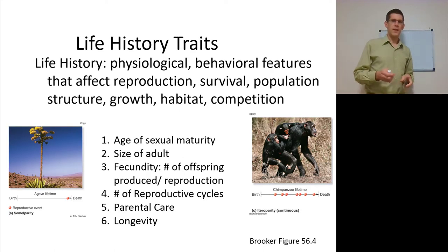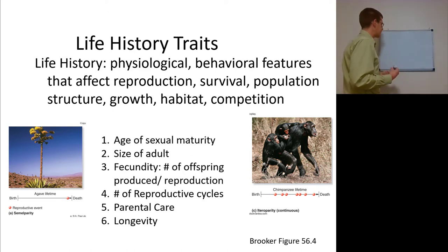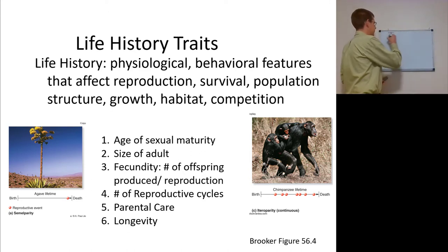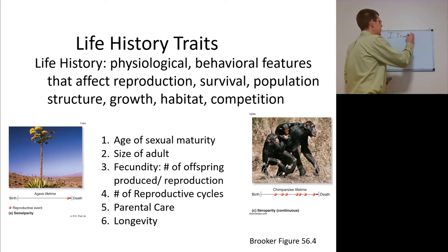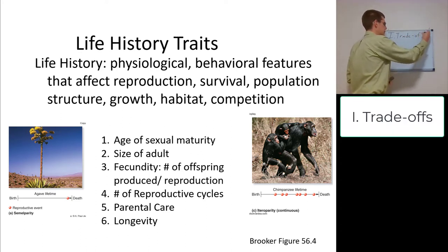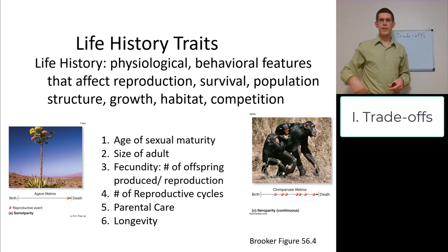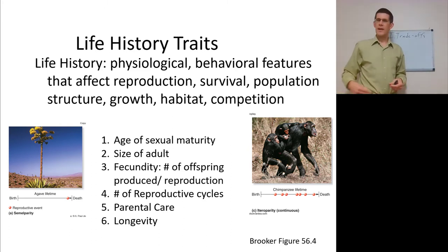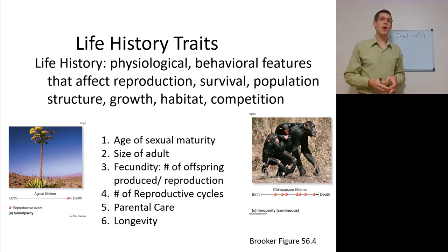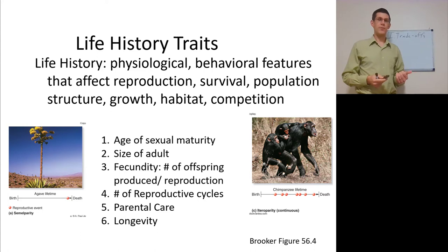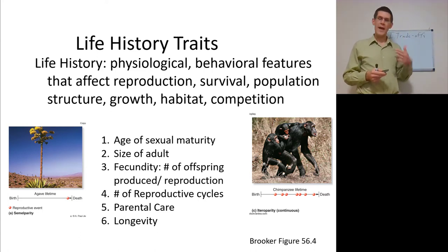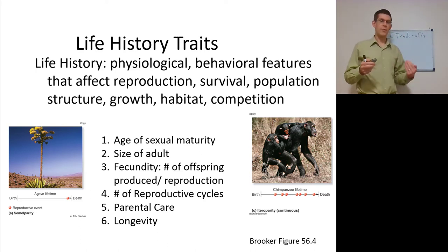Let's start with the idea of various trade-offs in life history traits. What is there to trade? We'd all want to find an organism with a very young age of sexual maturity, that is very large, produces many offspring per reproductive cycle, reproduces every day, is able to invest a ton of parental care, and lives for a thousand years. But clearly, that got more ridiculous the further I went.